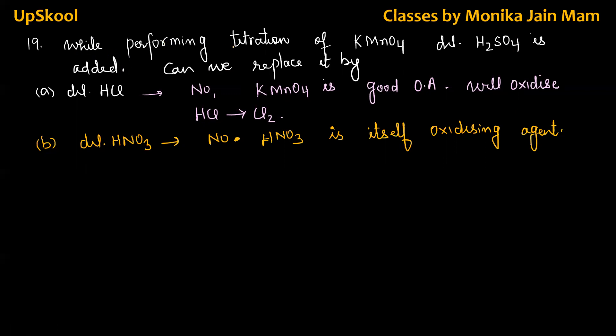Next point, while performing titration of potassium permanganate, some dilute sulfuric acid is added. One is during preparation of mohr salt. Second one, which we discussed now, that when we are doing titration, we are adding dilute sulfuric acid in flask. So, can we replace it by dilute hydrochloric acid? No. Because KMnO4 is a good oxidizing agent and it will oxidize HCl to chlorine. Can we replace it by dilute HNO3? Again, big no. HNO3 is itself oxidizing agent. So if it itself starts oxidizing, then our quantitative measurement will have error.